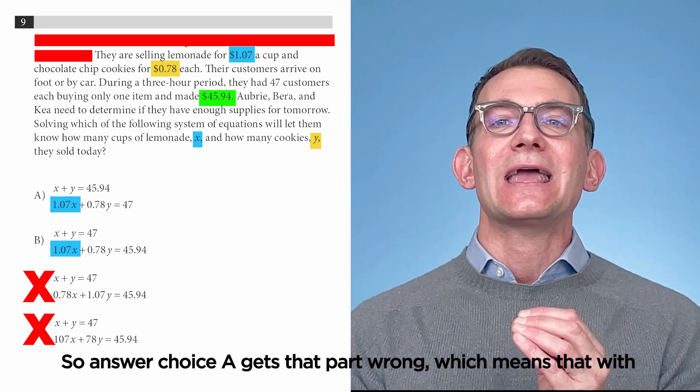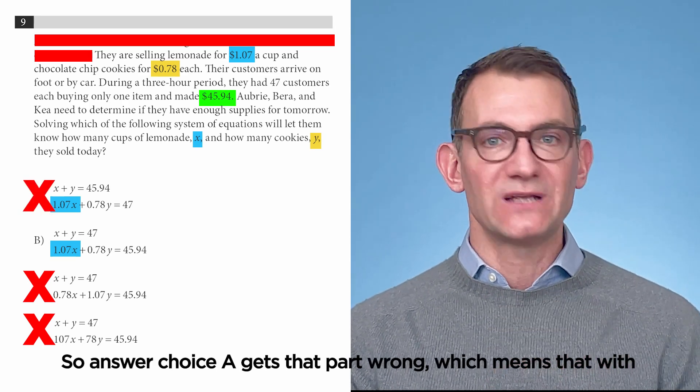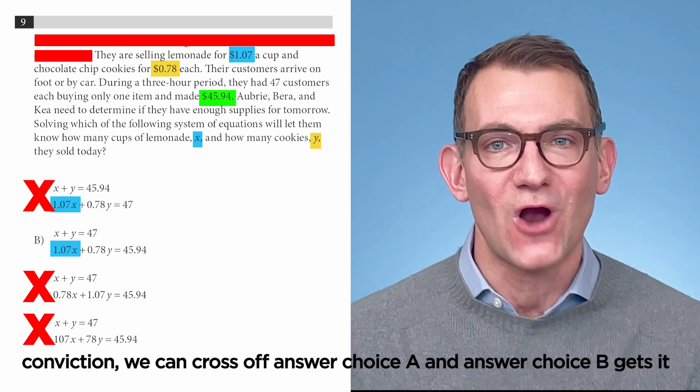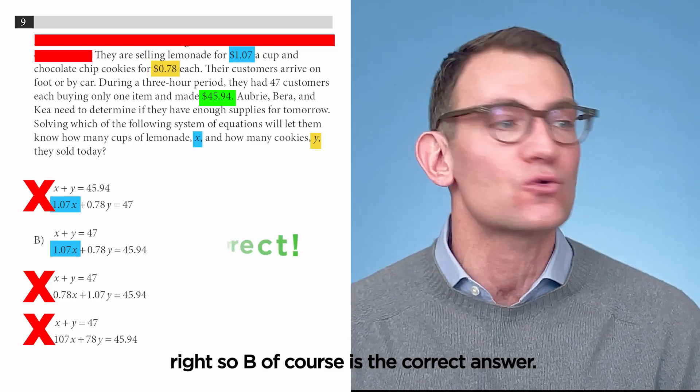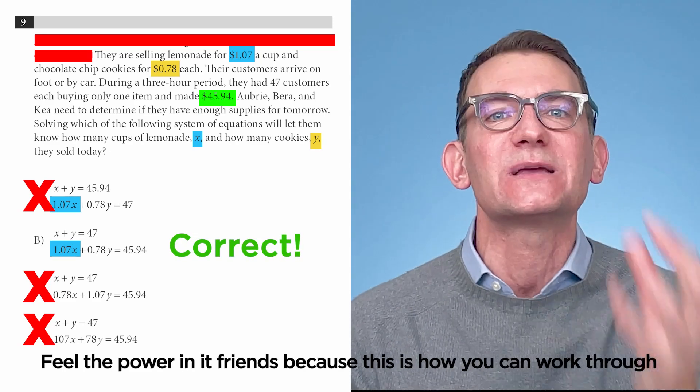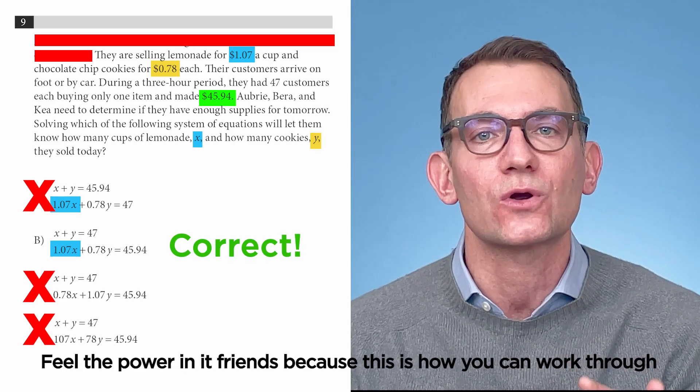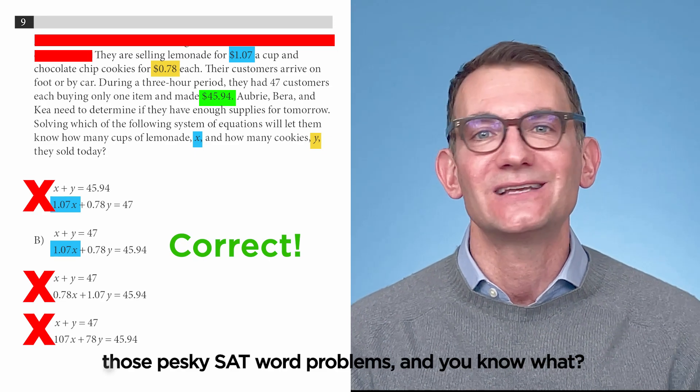So, answer choice A gets that part wrong, which means that with conviction, we can cross off answer choice A. And answer choice B gets it right. So, B, of course, is the correct answer. Feel the power in it, friends, because this is how you can work through those pesky SAT word problems.